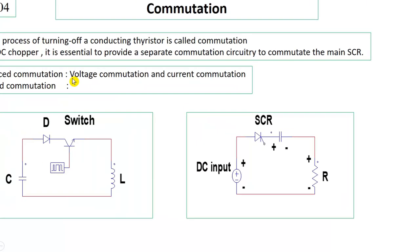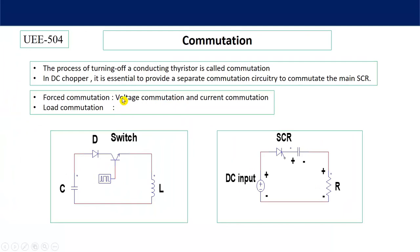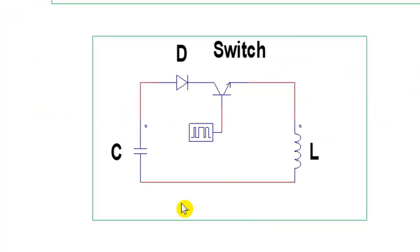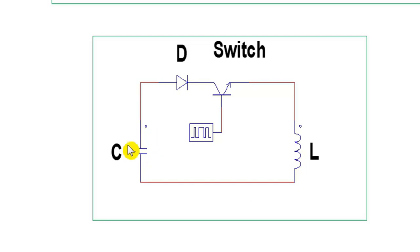Now let us discuss about voltage commutation. To understand voltage commutation we have to go through some basic circuits — this is the LC oscillation circuit. In this circuit a pre-charged capacitor is connected through a diode, a switch, and an inductor. Suppose the upper plate of the capacitor is positive and the lower plate is negative, then this diode will get forward biased and current will flow when the switch is made on.